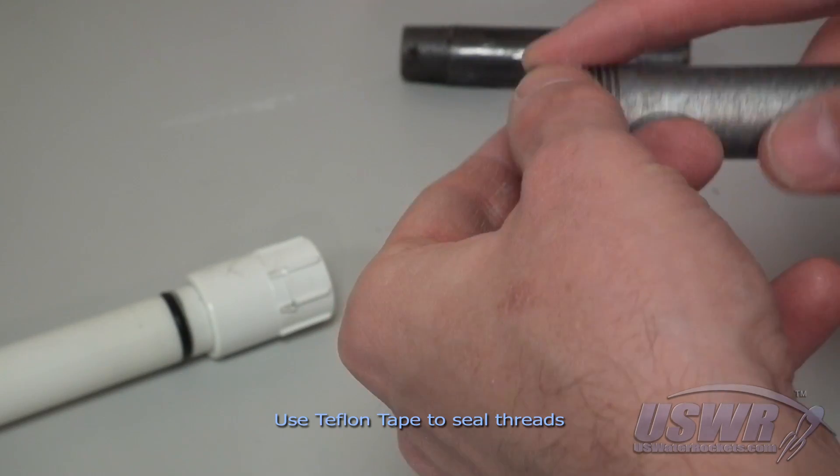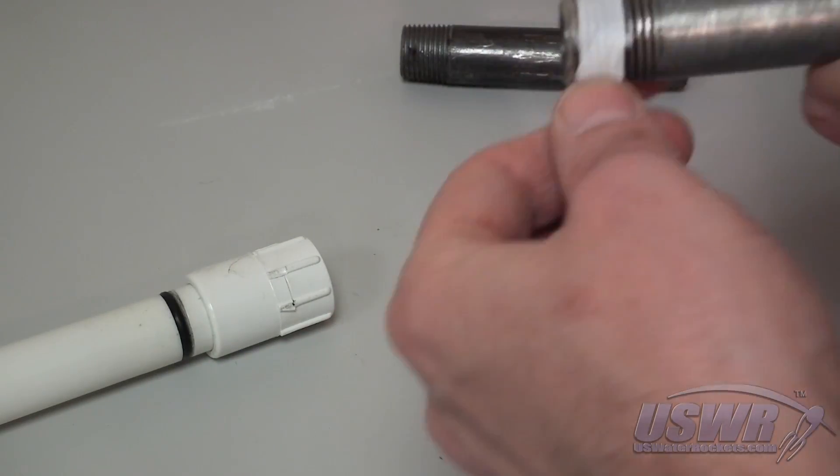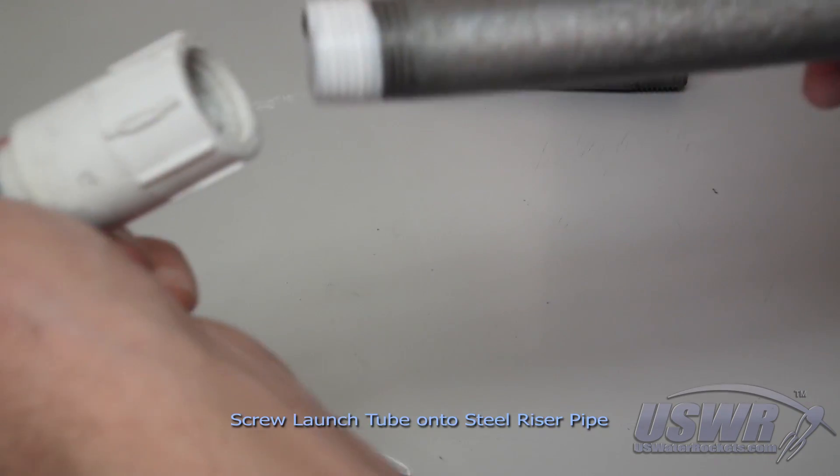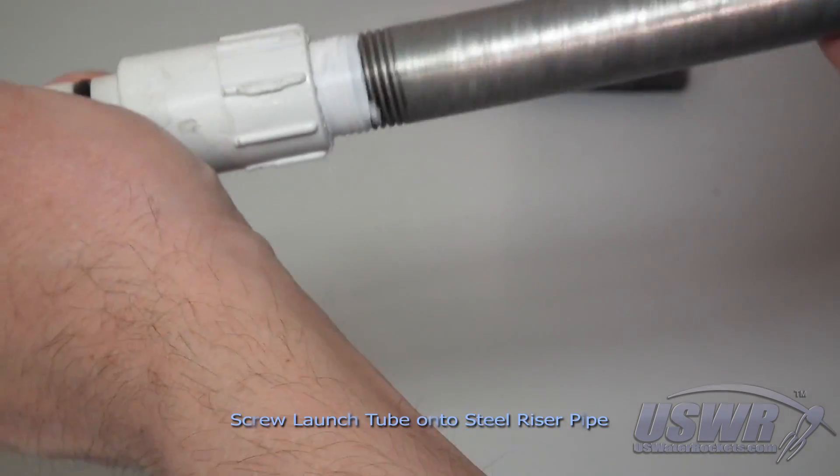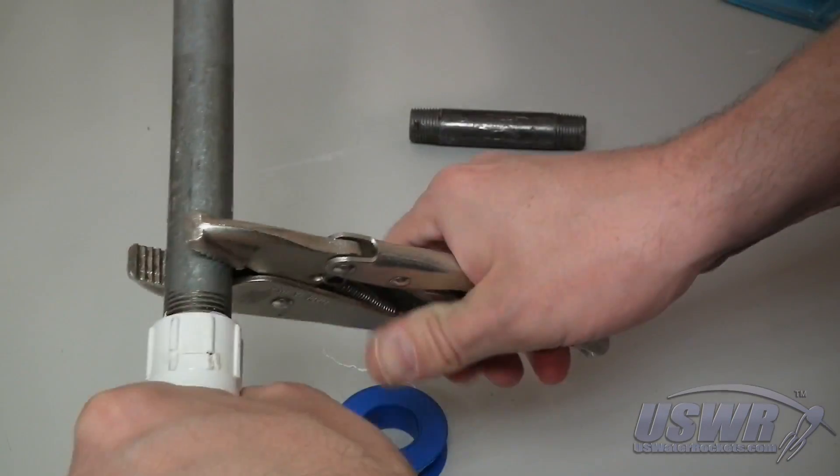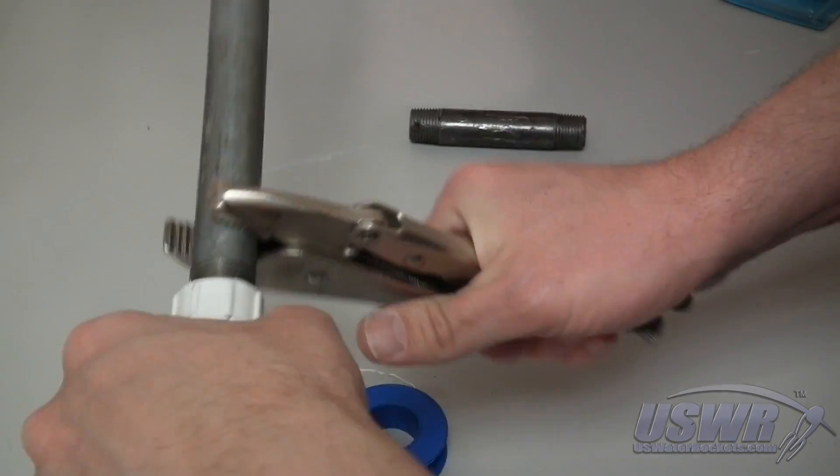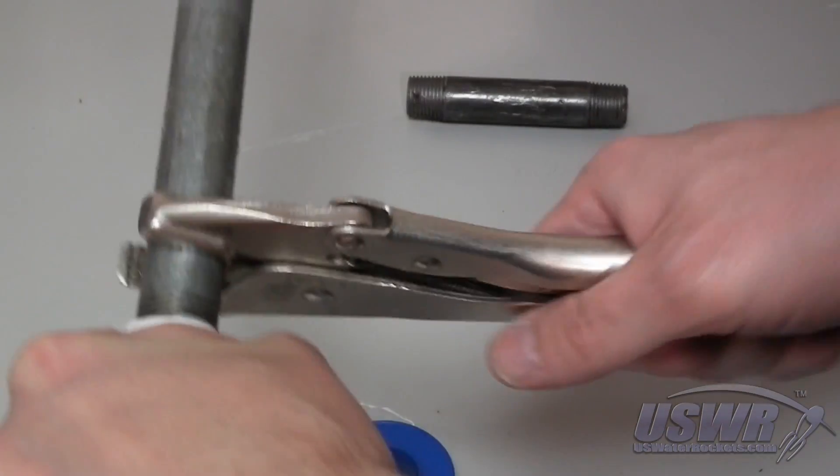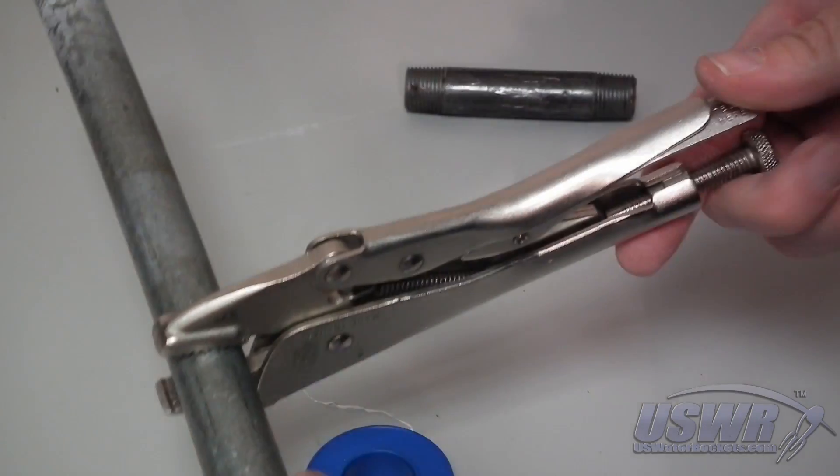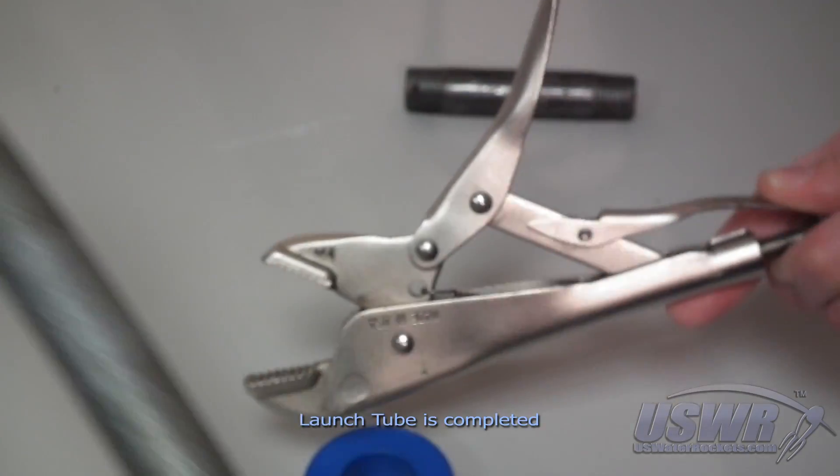Apply Teflon thread tape to the end of a 1 1/2 inch metal riser pipe. The riser supports the full weight of the rocket so it should be made from metal pipe. Use a pipe wrench or locking pliers to tighten the launch tube onto the riser pipe. You may now release the locking pliers or pipe wrench.